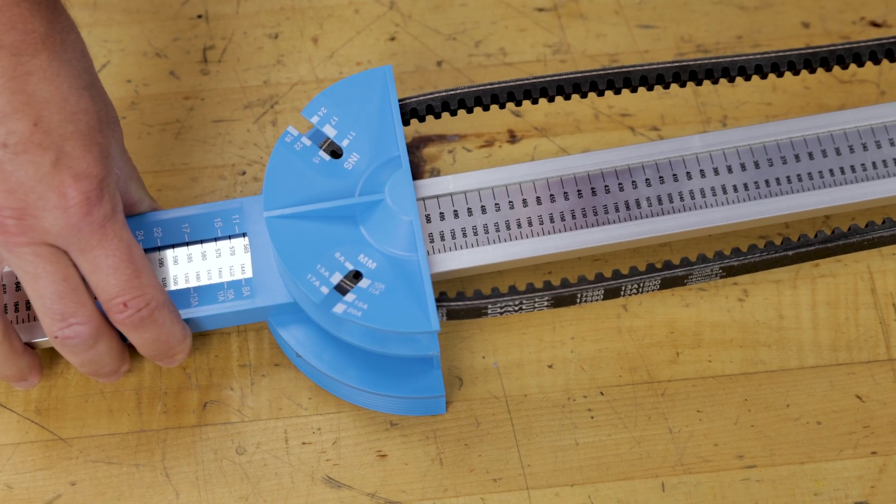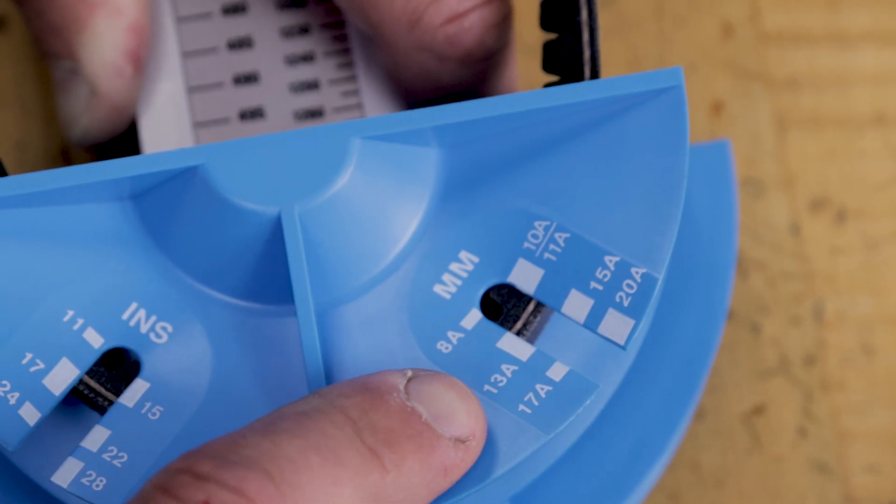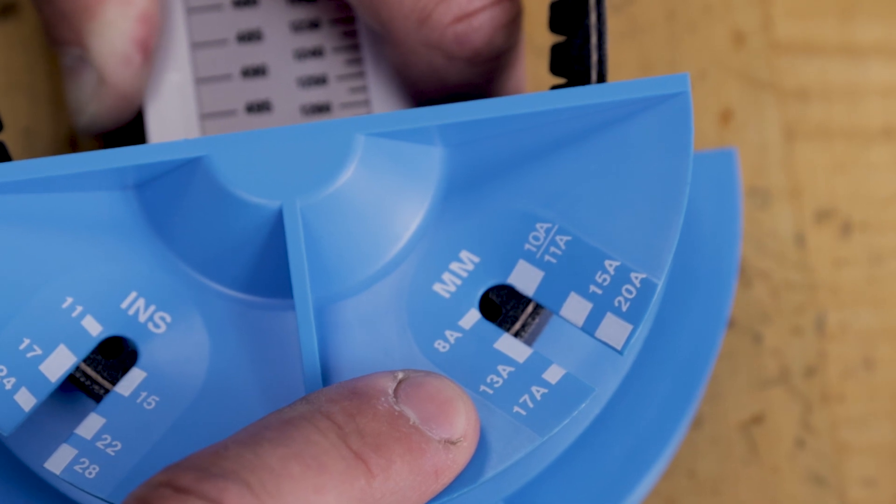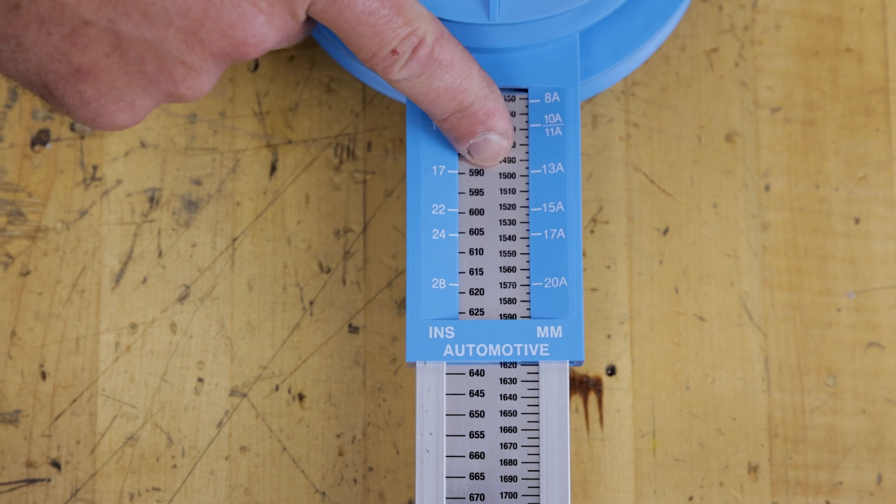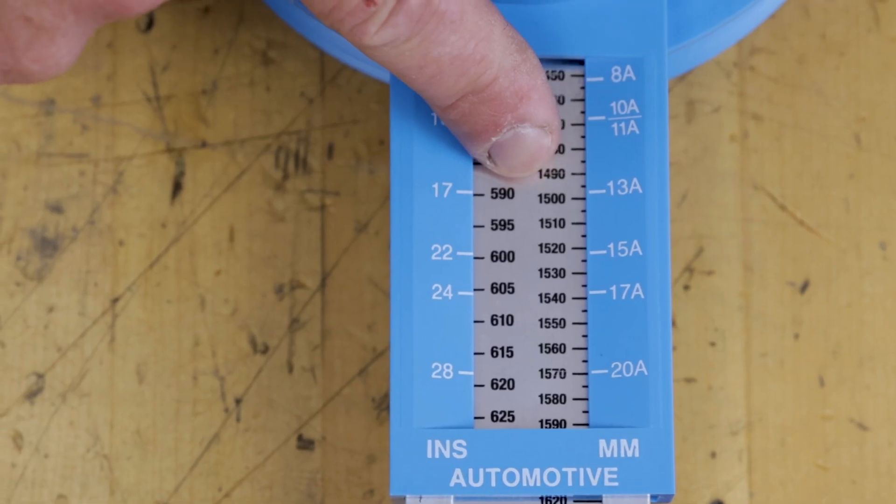Now, let's look at the metric measurement. This belt falls into the 13A block. So go down to the rectangular measurement window again and check the number next to the 13A line. It reads 1500 millimeters.